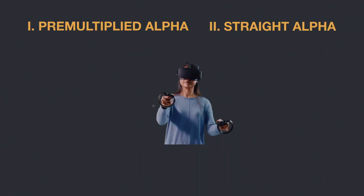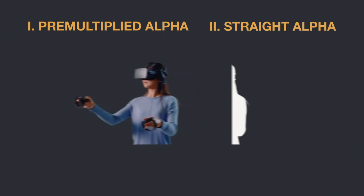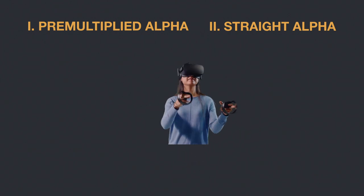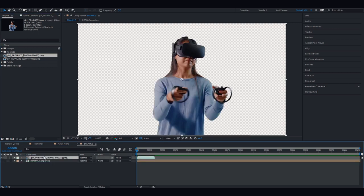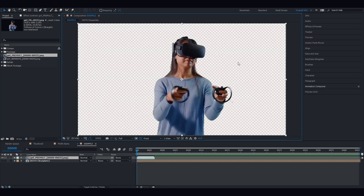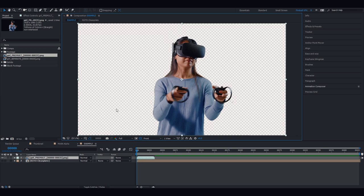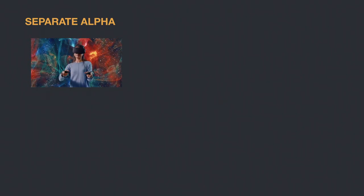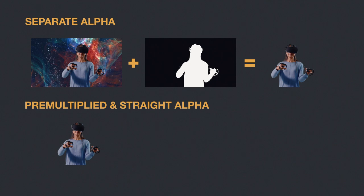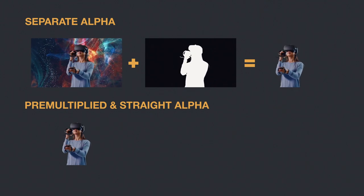Premultiplied and straight alphas are when the file already contains the alpha channel along with the RGB. In this case, as a compositor, you simply receive the file where an object is already isolated from the background — you just have to import the file and interpret it if necessary. Premultiplied alpha is a file that is already prepared with an alpha channel inside of it. So if you check the alpha channel inside, you will see that it is already there, and it cuts out automatically as you import it into the software. To compare: separate alpha is when you receive a file and have to use it as a luma matte and separate the object yourself. With premultiplied and straight alpha, you just import the file and it's working already.